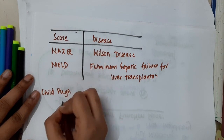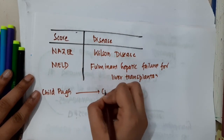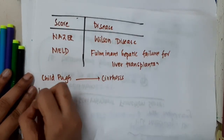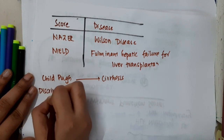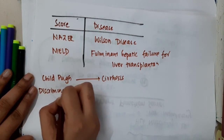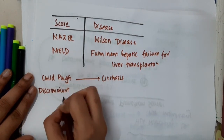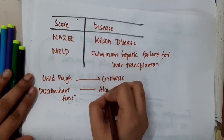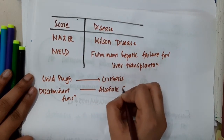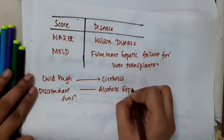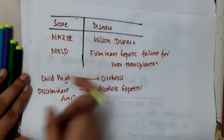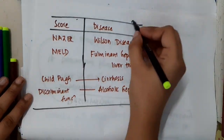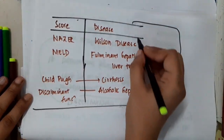Child-Pugh score is for cirrhosis. Then we have Discriminant Function score, which is for alcoholic hepatitis. So these are the important scores and the diseases.